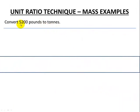Here's an example. We want to switch from 5,200 pounds to tonnes, T-O-N-N-E-S. And we should recognize that, well, pounds is imperial system, but tonnes, T-O-N-N-E-S, that is the metric system.